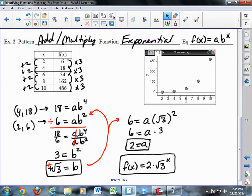Notice I only use the positive square root because you never have a negative base in an exponential function. Then I can substitute that value for b back into the second equation. I chose that one, and 6 equals a times square root of 3 squared, which is just 3. So a is going to be 2. So my final equation is f of x equals 2 times square root of 3 to the x.